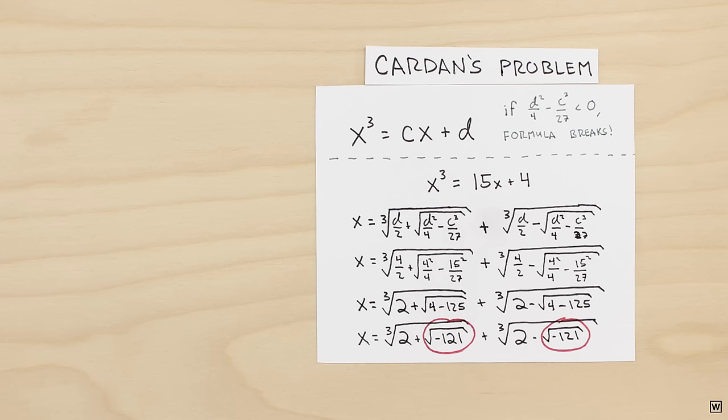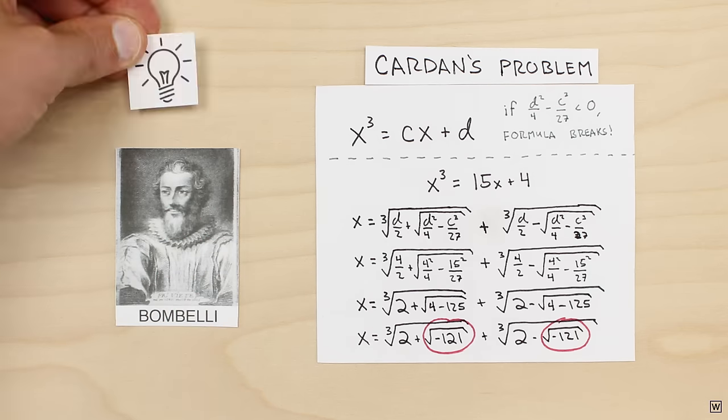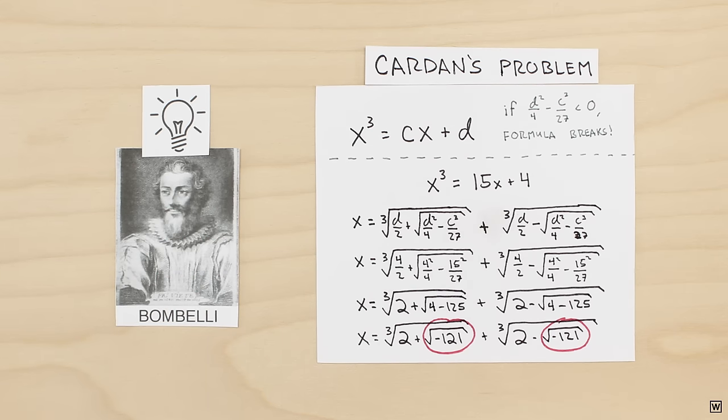but it isn't enough to solve Cardan's problem. We still need to figure out how to deal with the cubed roots of these numbers. Bombelli was able to solve our problem through one more powerful insight. And that's what we'll discuss next time.